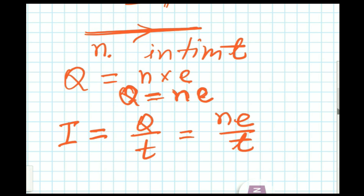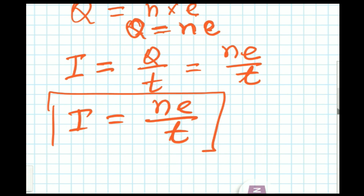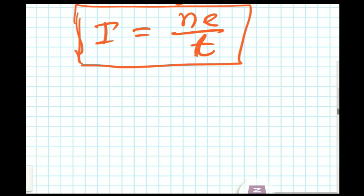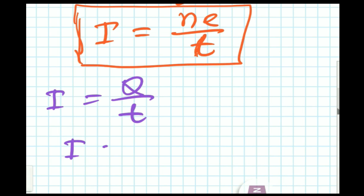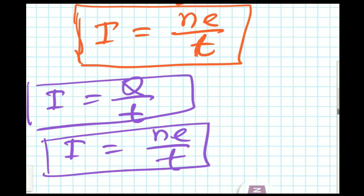Using Q by t, the current ultimately becomes I equals ne by t, which is a more realistic picture of current. This allows us to analyze how many electrons are flowing through a conductor, what the charge is, and the time taken. So remember these two equations: I equals Q by t, and I equals ne by t. In the next video I will tell you about the concept of potential and potential difference.